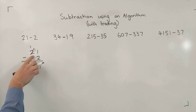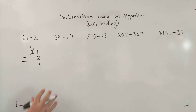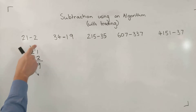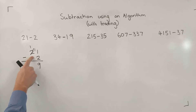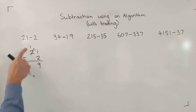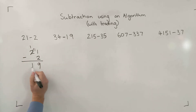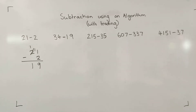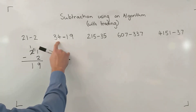Now for my tens column — it's not 2 there anymore, we already took one of those tens away, there's only one left. I crossed it out clearly and wrote one above so I remembered. One take away nothing, well that's just going to leave us with one. So 21 take away 2 equals 19. Does that check for sense? In my mind: 21, 20, 19 — it sounds reasonable.